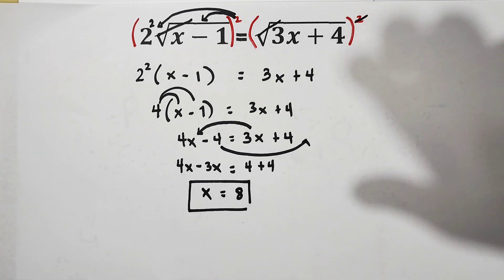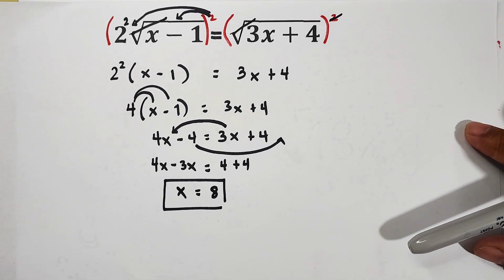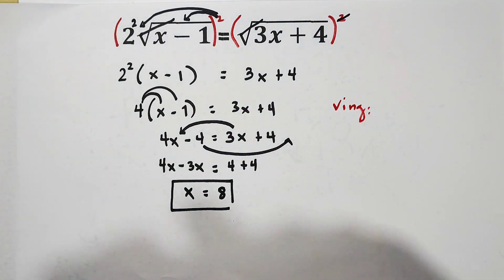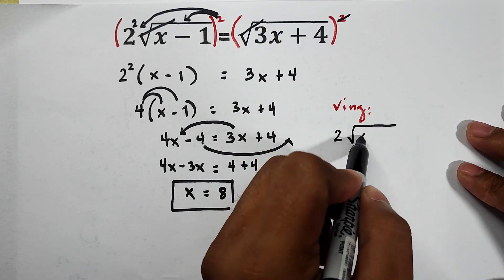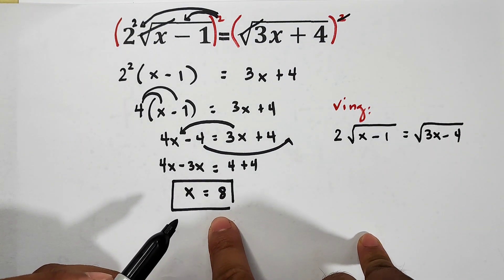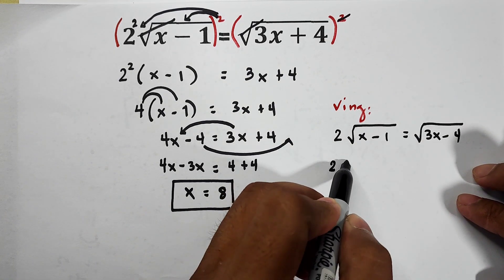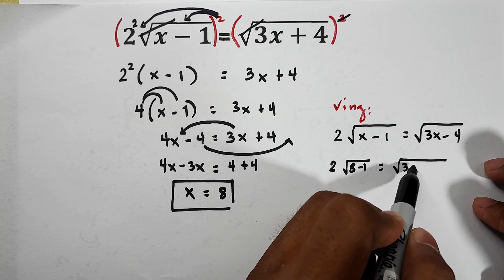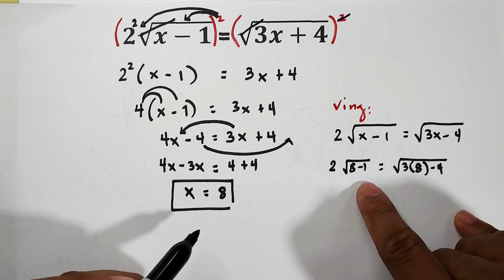That's it guys, but if you want to check whether your answer is correct, we can do the checking. For the checking, we will use the original equation: 2 square root of (x minus 1) is equal to the square root of (3x plus 4). The value of x is 8.